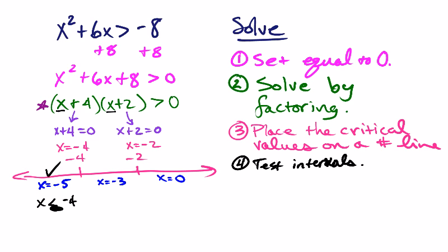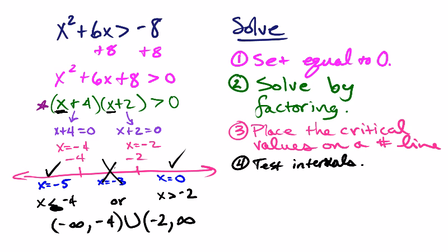Then we plug in negative 3: negative 3 plus 4 is 1, negative 3 plus 2 is negative 1 — multiply those together, you get a negative number, that's not going to be greater than 0, so that middle interval won't work. Plug in 0: 0 plus 4 is 4, 0 plus 2 is 2, 4 times 2 is 8, that is bigger than 0, so we give it a check mark. So x can be greater than negative 2. We have an or inequality: either x is less than negative 4, or x is greater than negative 2. In set notation, that's negative infinity to negative 4 with parentheses, union, negative 2 to positive infinity.